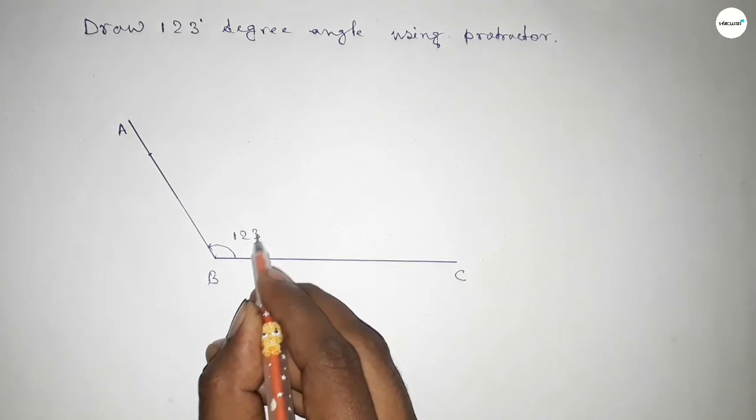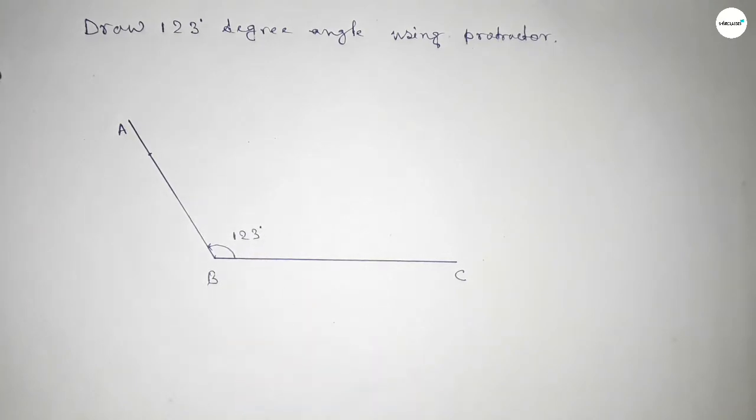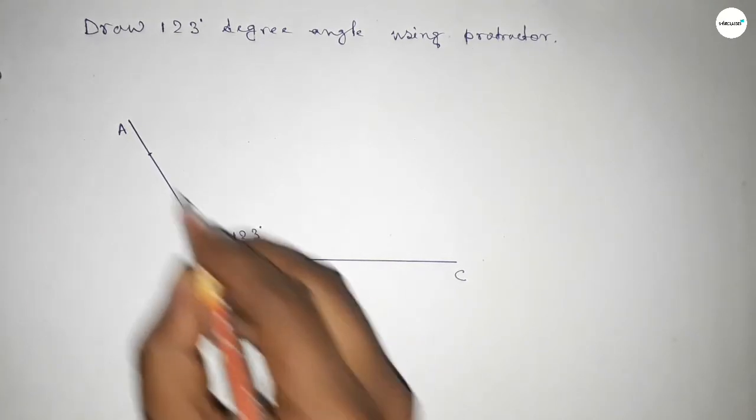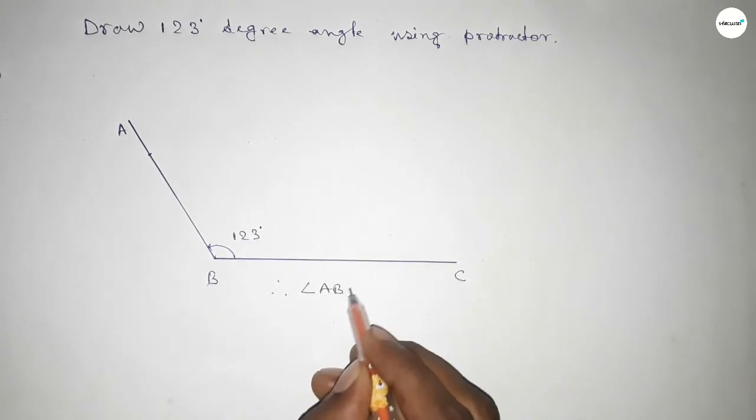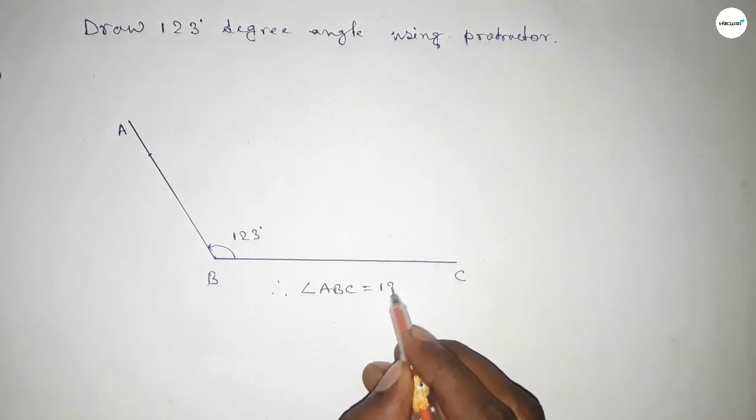Therefore, angle ABC equals 123 degrees.